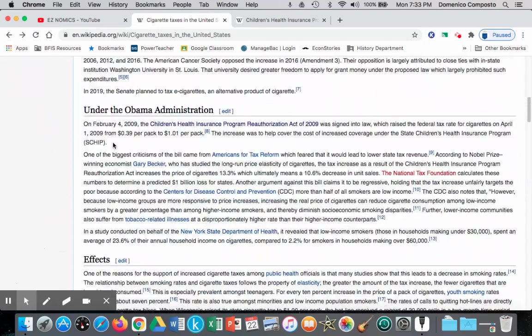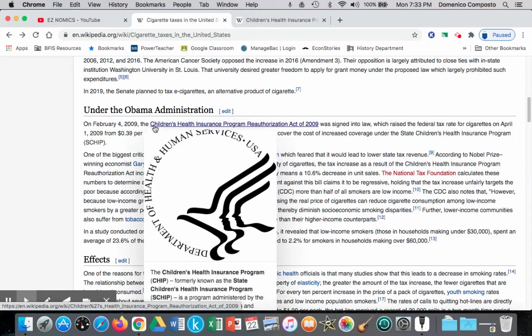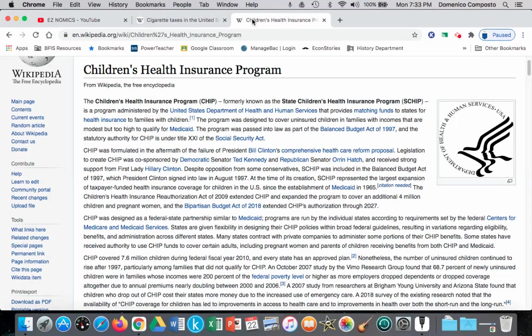And if we look at a recent example, February 4th, 2009, under the Obama administration, we have the Children's Health Insurance Program Reauthorization Act, and this act sought to increase taxes on cigarettes to raise federal tax revenue so that the federal government could match funds to states to provide health insurance to families with children. These are families that did not qualify for Medicaid, so this was a program to capture those families with children to ensure that these children, along with their families, had access to health care in the United States.